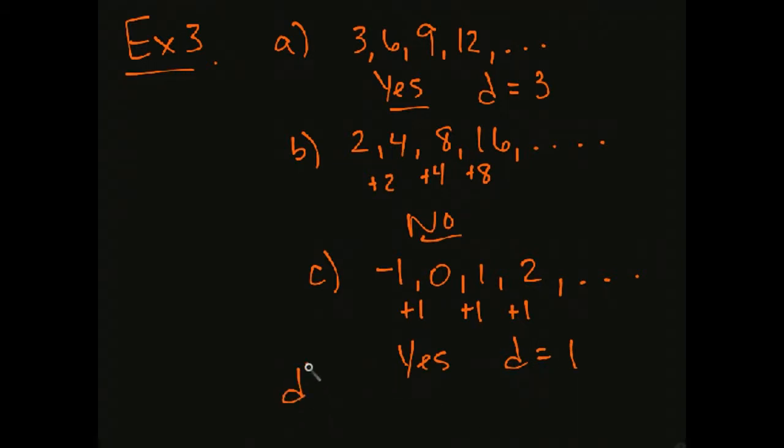And then the last one, we have 1 half, 0, negative 1 half, negative 1. So what am I doing? I'm subtracting a half, subtracting a half, subtracting a half. So yes, and the common difference is negative 1 half.